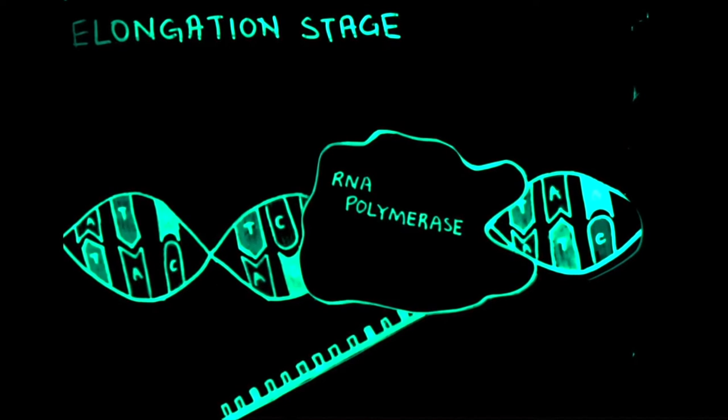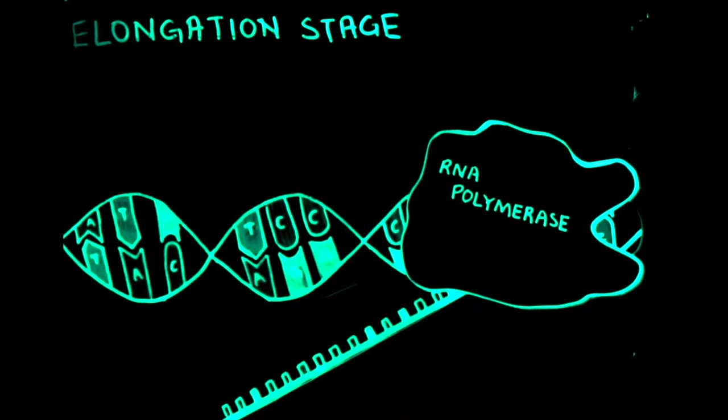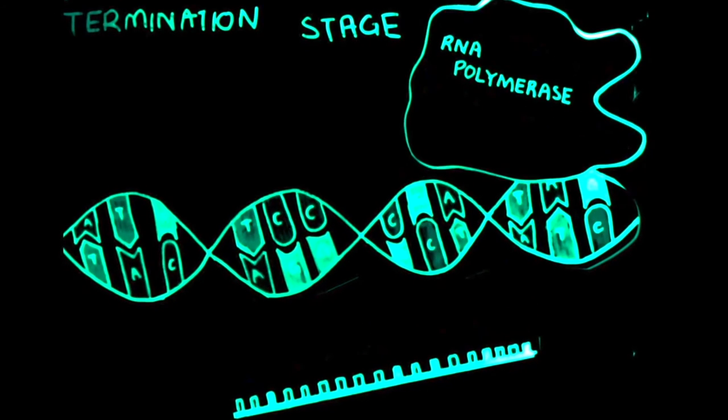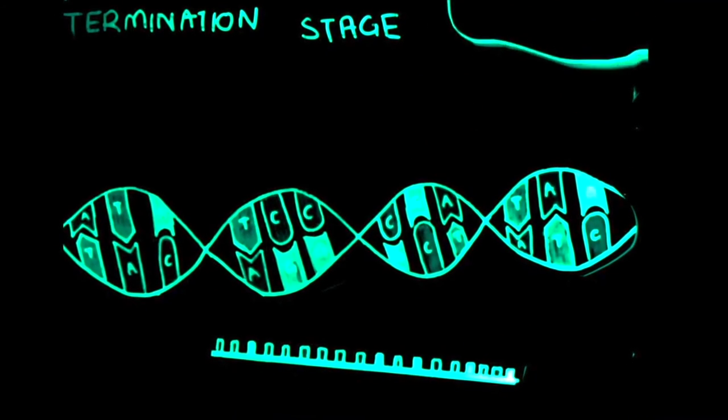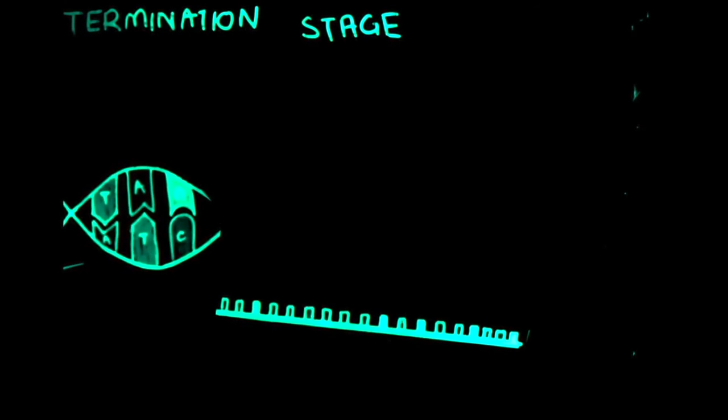When the RNA polymerase reaches the terminator codons, it stops and the creation of the mRNA is complete. However, before the mRNA can leave the nucleus to continue on to translation, it has to undergo some modifications.